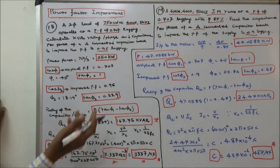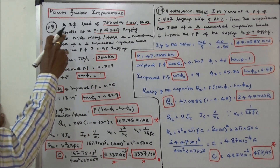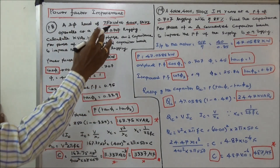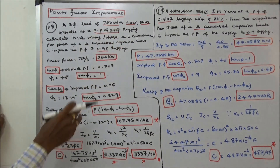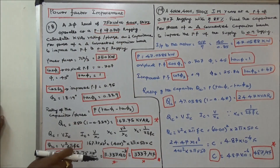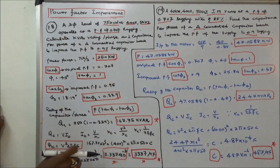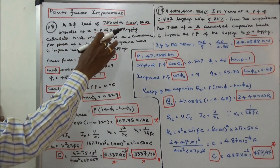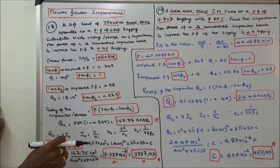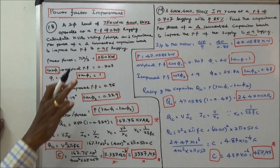This class we have got four problems. First problem is a three-phase load of 750 kW at 400 V, 50 Hz, operates at a power factor of 0.707 lagging. Calculate kilo volt ampere reactive rating per phase and capacitance per phase of a delta connected capacitor bank to improve the power factor to 0.95 lagging.